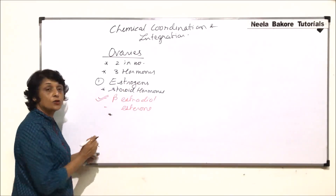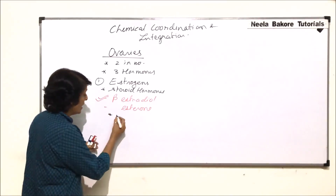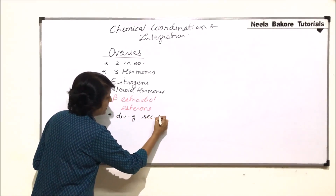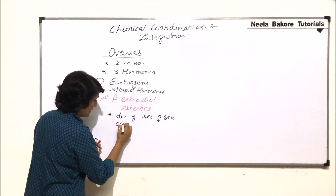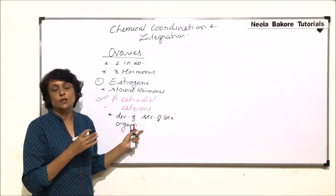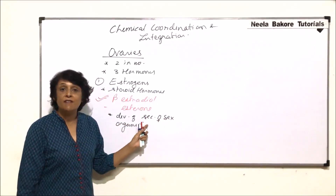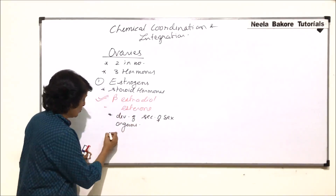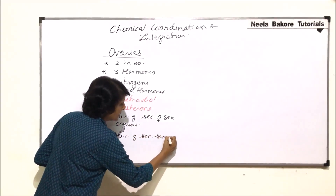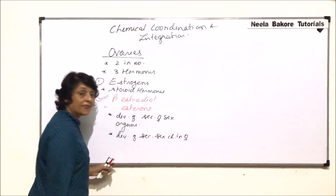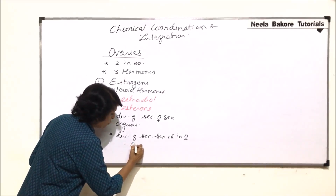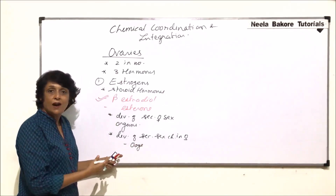The first function is that estrogen is the female sex hormone and it helps in development of secondary female sex organs — all associated or assisting organs such as fallopian tube and uterus. It also helps in the development of secondary sex characters in females, including the start or restart of oogenesis.